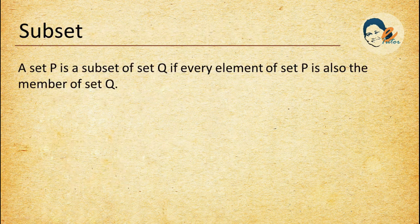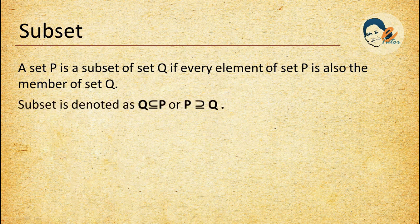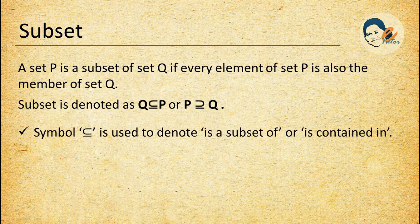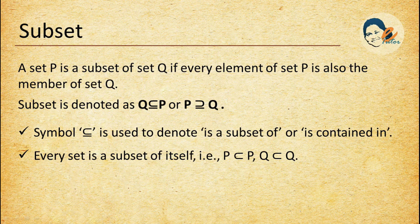Subset: a set P is a subset of set Q if every element of set P is also a member of set Q. The subset symbol denotes 'is a subset of' or 'is contained in'. We read this as Q is a subset of P or Q is contained in P. Every set is a subset of itself — that is, P is a subset of P and Q is a subset of Q. The empty set is a subset of every set.